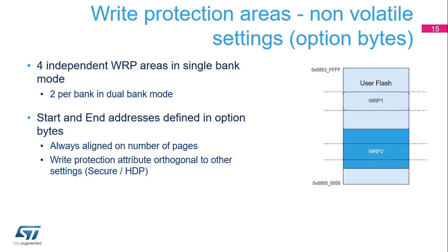Four write protection areas are supported: 2 per bank when D-bank equals 1, and 4 for the full memory when D-bank equals 0. Program and erase operations are prohibited in write protection areas. Consequently, a software mass erase cannot be performed if an area is write protected. Each area is defined by a start page offset and an end page offset relative to the physical flash bank base address. The write protection attribute is orthogonal to secure and HDPE settings.